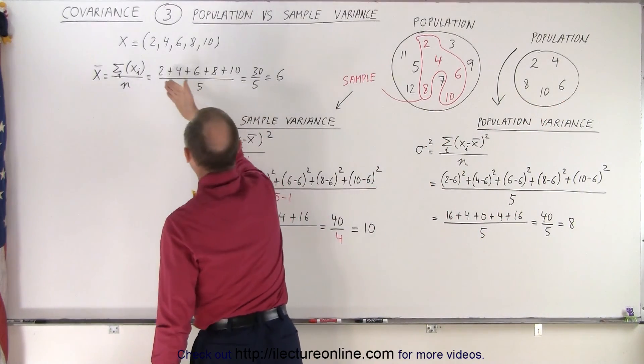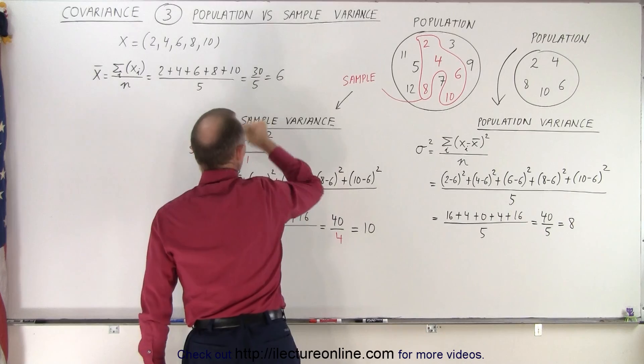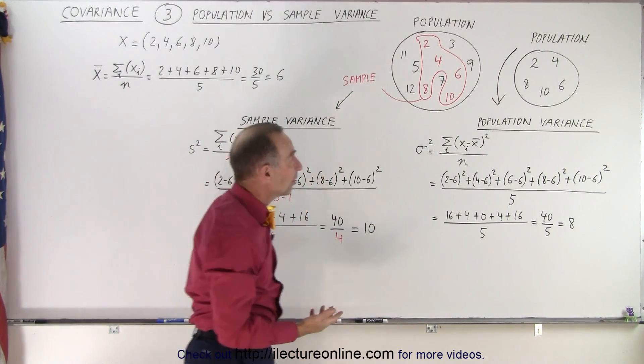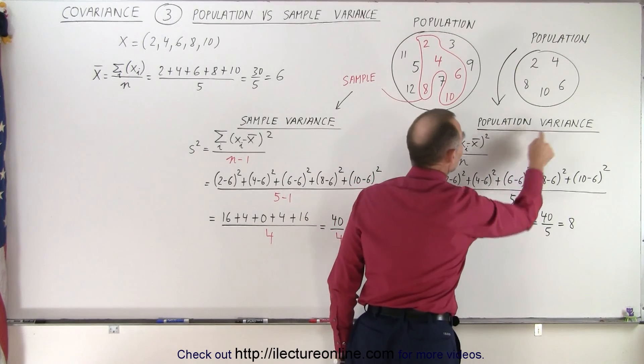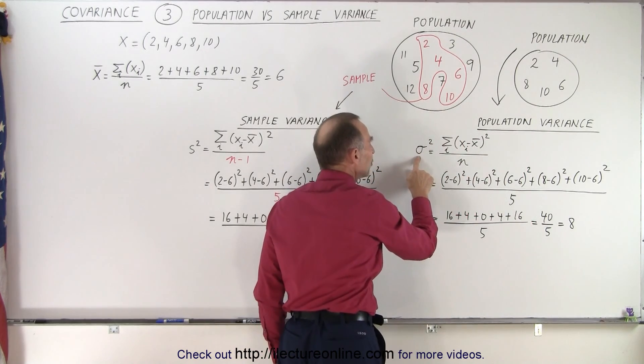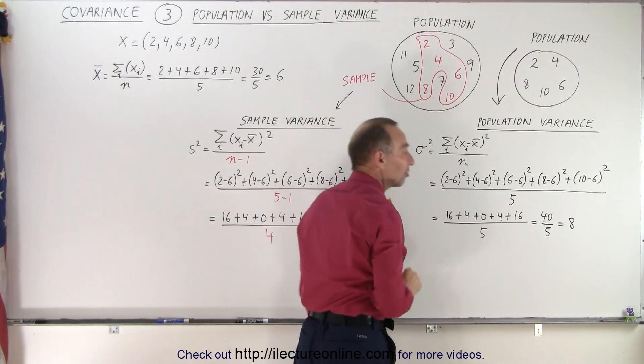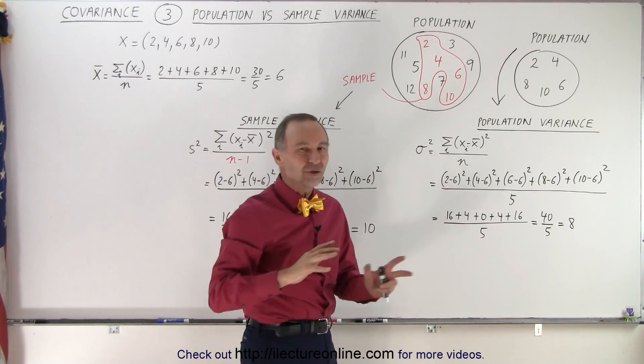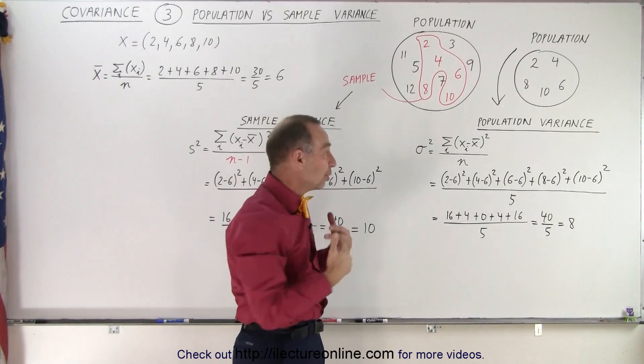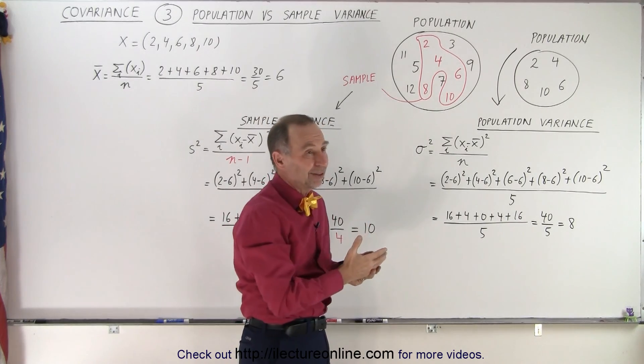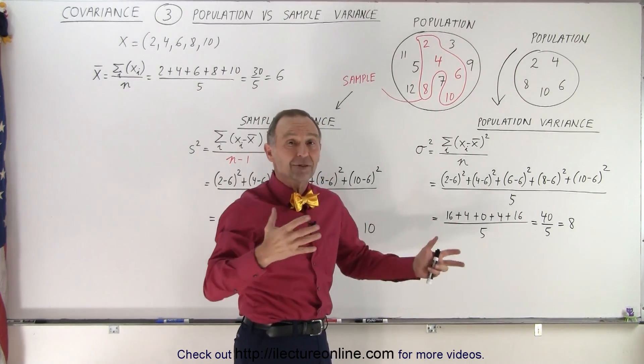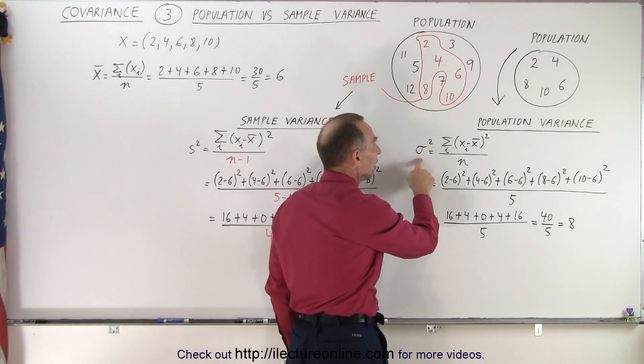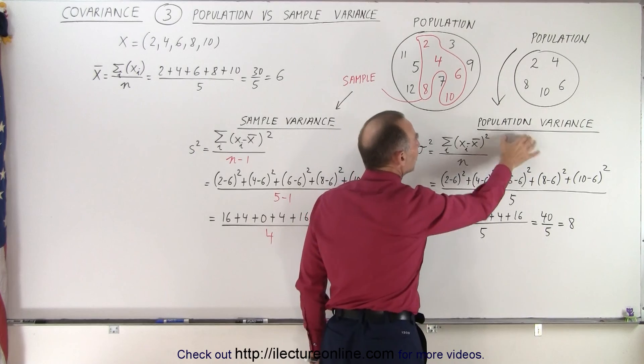We first find the average, which in this case is six. We've seen this data set before. And then we find what we call the population variance. Now notice the symbol we use. We use the Greek letter sigma, rather than s, squared. We tend to interchange those freely, and not always use them correctly. In some cases, people don't really realize the difference between the two. But technically, we should use the sigma symbol, because we're dealing with the entire population.